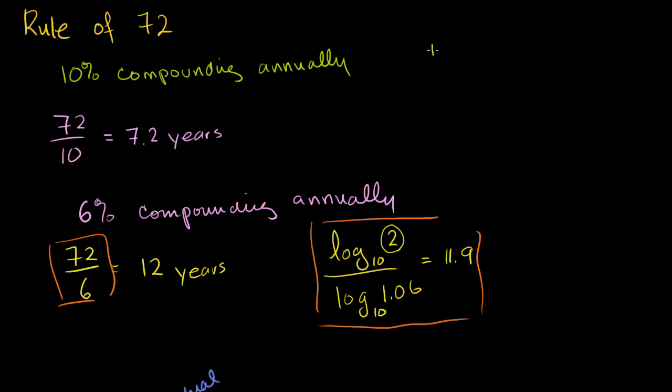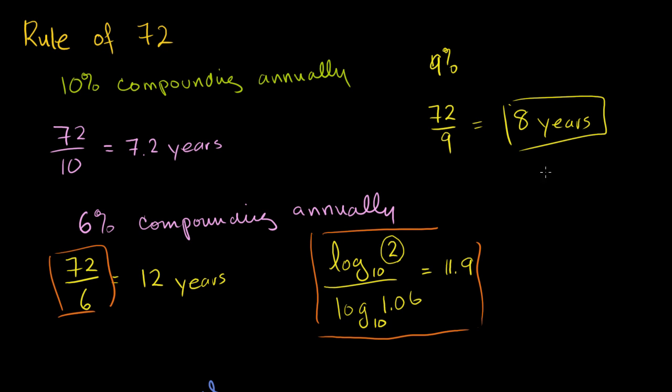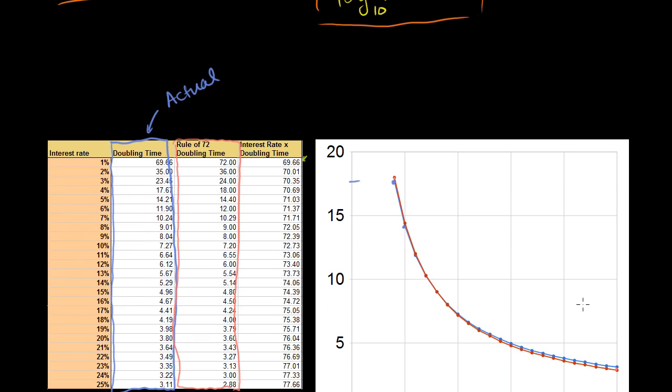Let's say I have a 9% annual compounding. How long does it take for me to double my money? Well, 72 divided by 9 is equal to 8 years. It'll take me 8 years to double my money. And the actual answer, this is the approximate answer using the rule of 72, the actual answer, 9% is 8.04 years. So once again, in our head we were able to do a very, very, very good approximation.